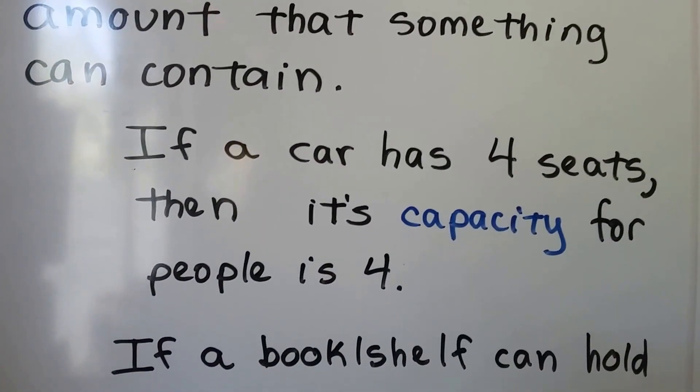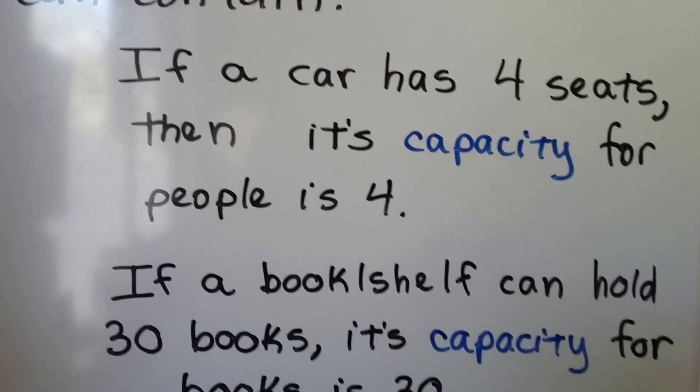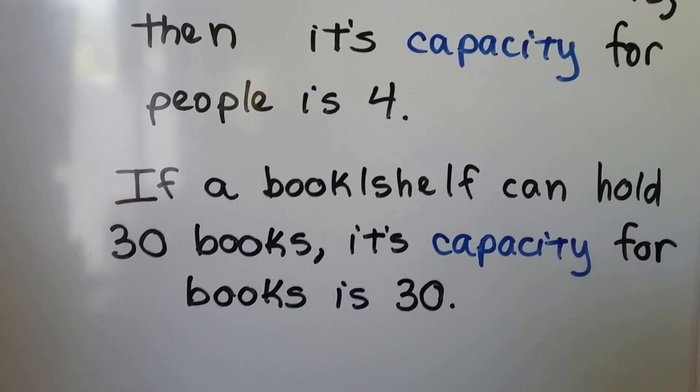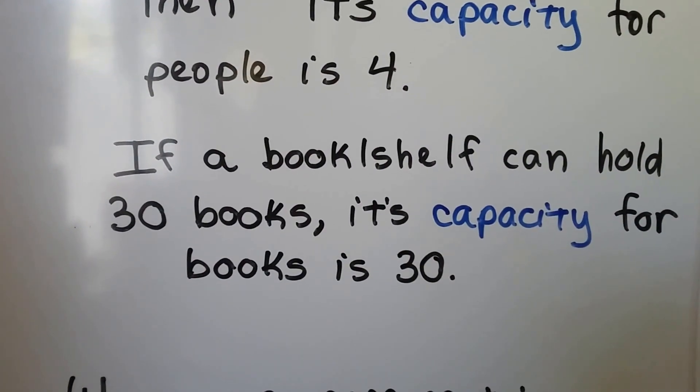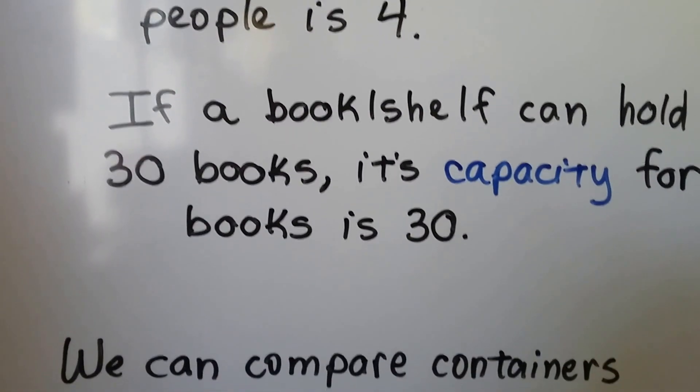If a car has four seats, then its capacity for people is four. If a bookshelf can hold 30 books, its capacity for books is 30. It's how much it can hold.